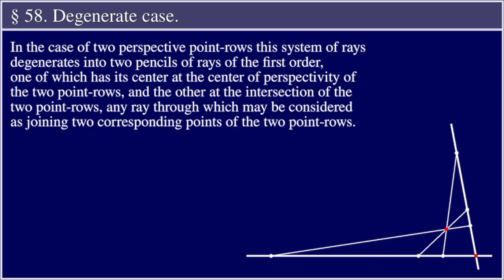Section 58, Degenerate Case. In the case of two perspective point rows, this system of rays degenerates into two pencils of rays of the first order, one of which has its center at the center of perspectivity of the two point rows, and the other at the intersection of the two point rows. Any ray through which may be considered as joining two corresponding points of the two point rows.